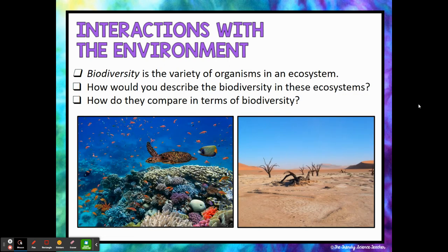One term that we are going to hear in just about every lesson in this unit is biodiversity, so make sure you grab this definition. Biodiversity is the variety of organisms that can be found in an ecosystem — all the living things that make up an ecosystem. If we compare the two ecosystems on your screen, hopefully you notice that the one on the left appears much more biodiverse than the one on the right. They both include biodiversity, but we've got a lot going on in the aquatic coral reef ecosystem and not a lot of variety in the desert ecosystem. So we would say the coral reef ecosystem is more biodiverse than the desert ecosystem.